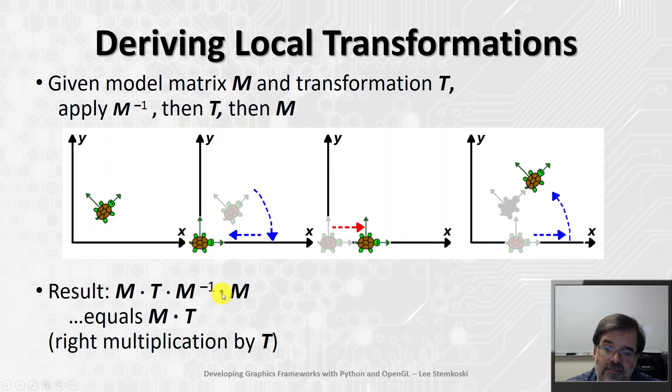Now it turns out there's some cancellation here. We have a matrix times its inverse, that gives us the identity, and anything times the identity is itself. So what we're left with is M times T. So this is the key takeaway. In order to perform this transformation as a local transformation, we actually need to multiply on the right by that matrix. And so local transformations correspond to right side multiplication by whatever that transformation matrix is. Right here, I represented it as translation, but it really could be any transformation that you'd like to do. And that's the key idea.